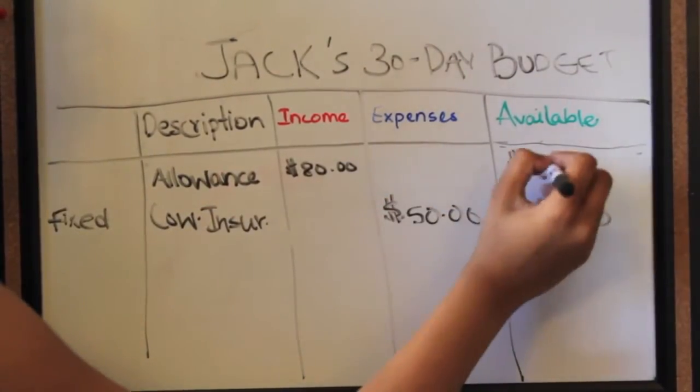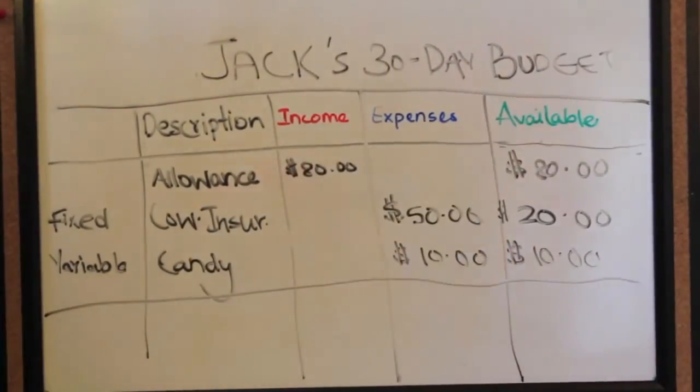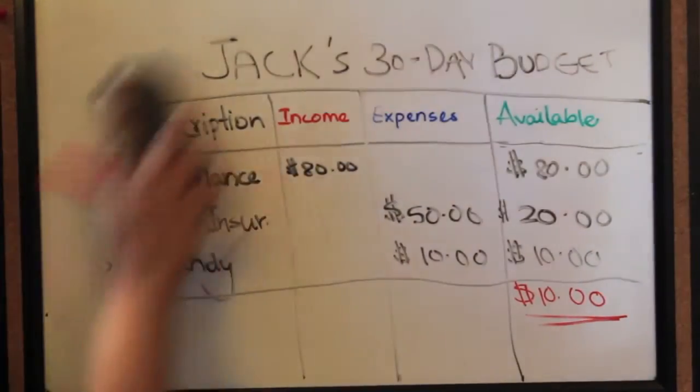Then you put down your fixed and variable costs. Which in this case, are cow insurance or candy. When you subtract them from your allowance, you will get your savings. Yay, savings!